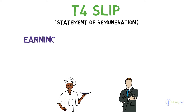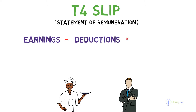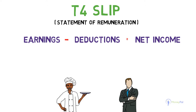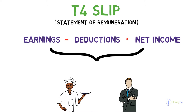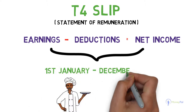The T4 slip is essentially a summary of your employment earnings and deductions for the year, issued by the employer. It shows how much you received in salaries, wages, bonus, and other earnings, and lists down all the deductions for the financial year beginning from the 1st of January until the 31st of December.